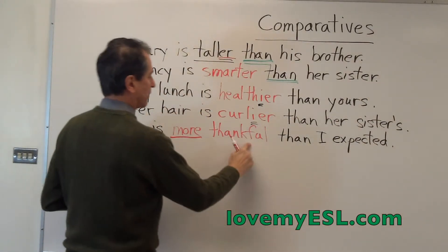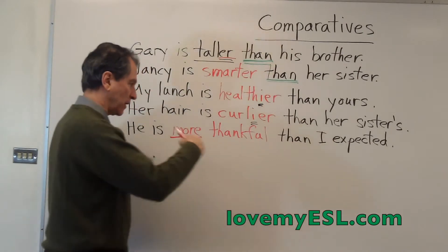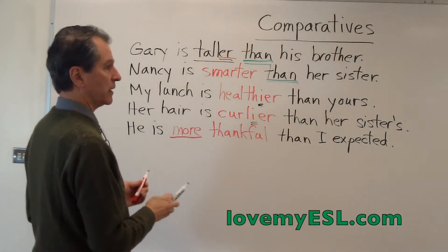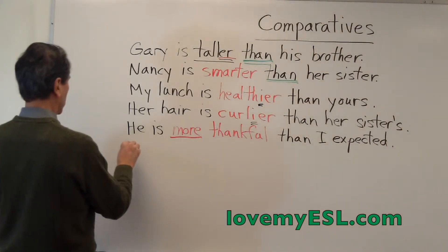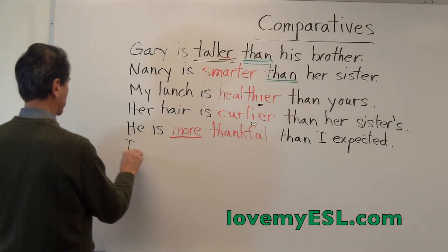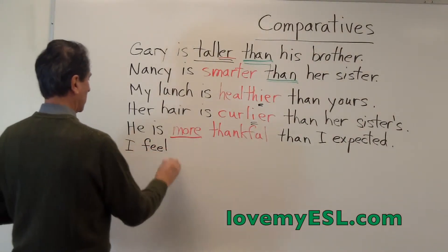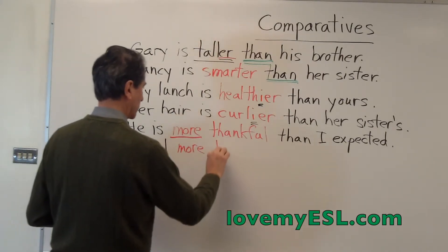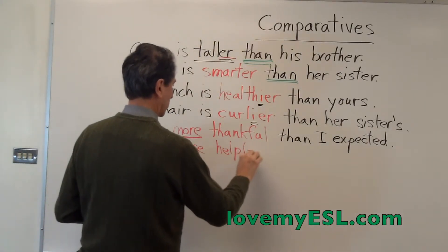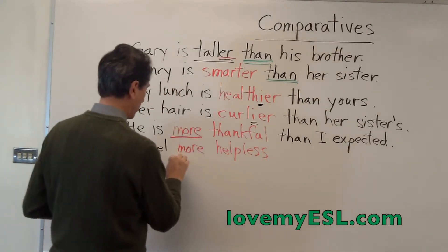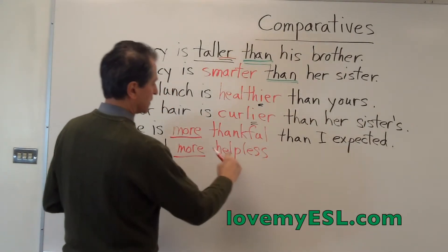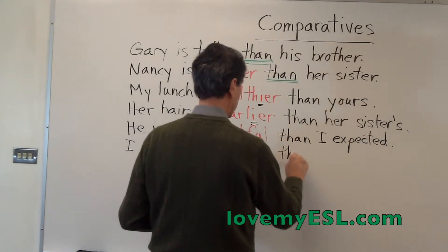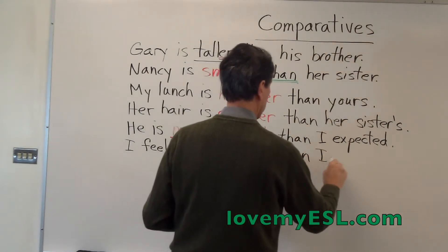Because 'thankful' is a two-syllable word, you have to put 'more' in front of two-syllable words. Another example: I feel more helpless — M-O-R-E, helpless, H-E-L-P-L-E-S-S. So I put 'more' in front of this. 'Helpless' is two syllables. More helpless than I did yesterday.